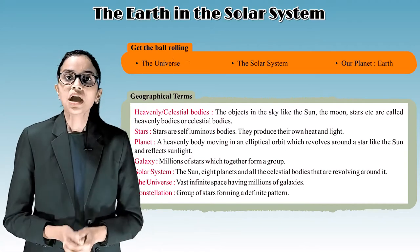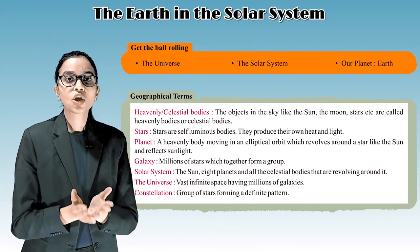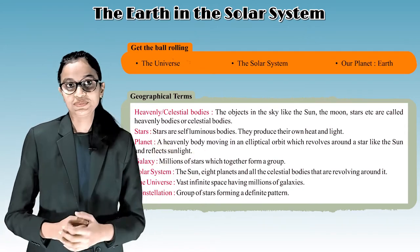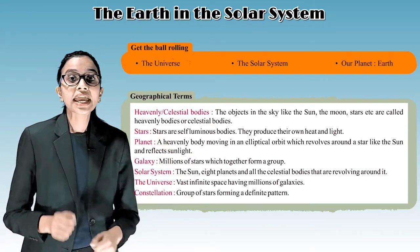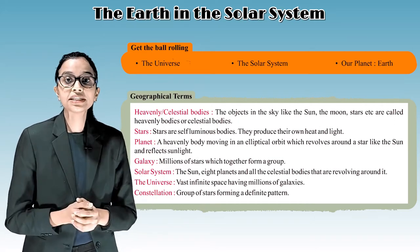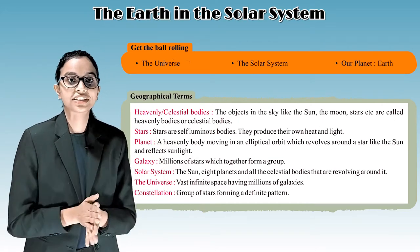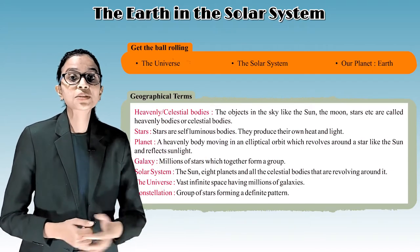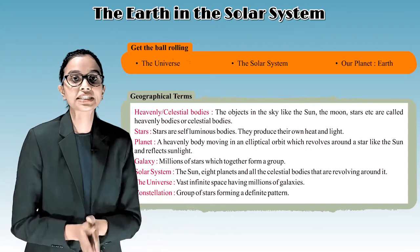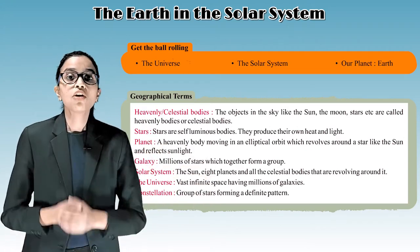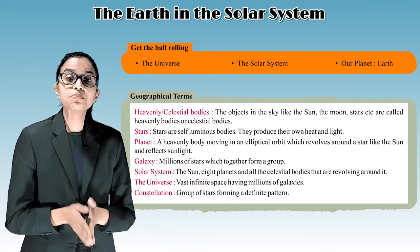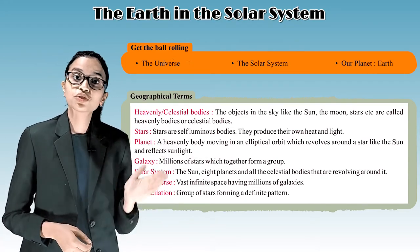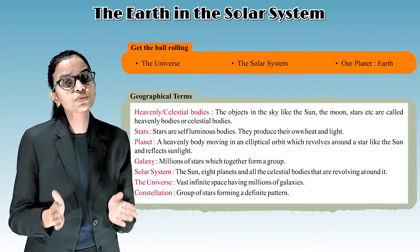Galaxy: Millions of stars which together form a group. Solar system: The sun, eight planets and all the celestial bodies that are revolving around it. The universe: Vast infinite space having millions of galaxies. Constellation: Groups of stars forming a definite pattern.